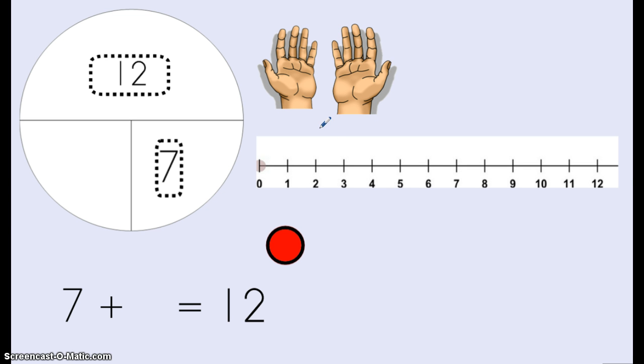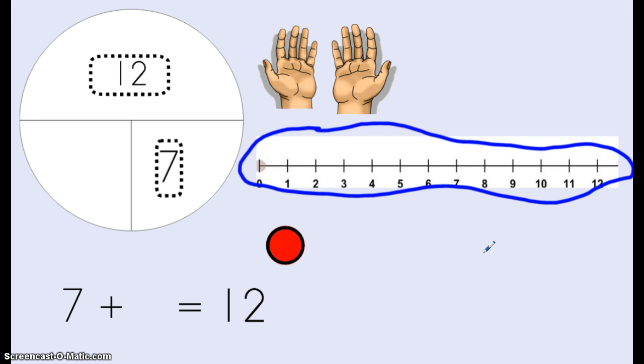Another strategy we used was a number line. We started at 7 and hopped until we count to 12.